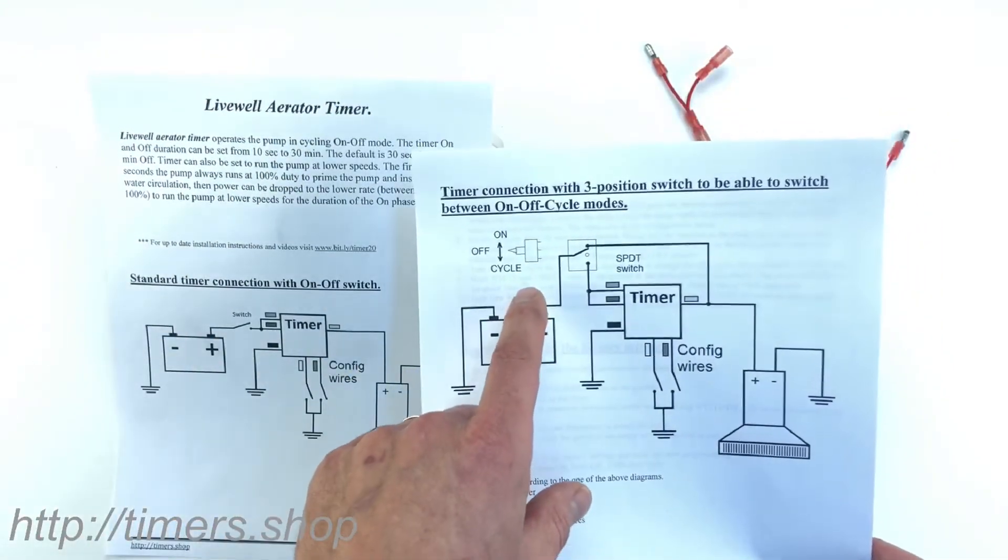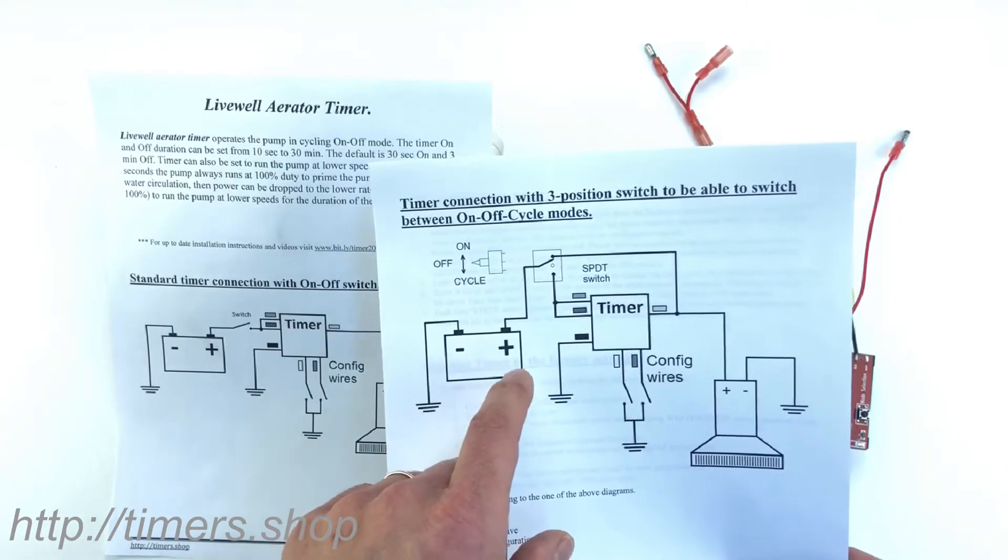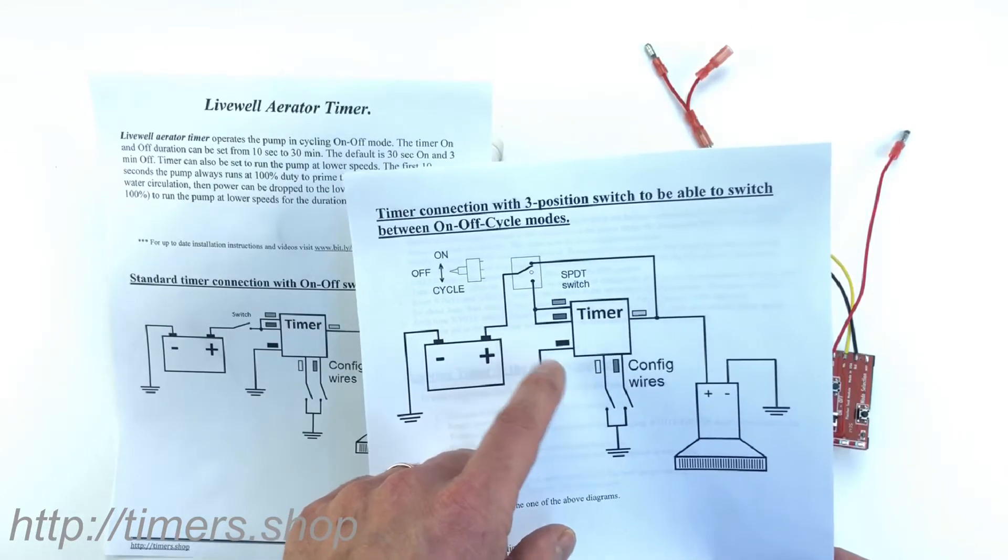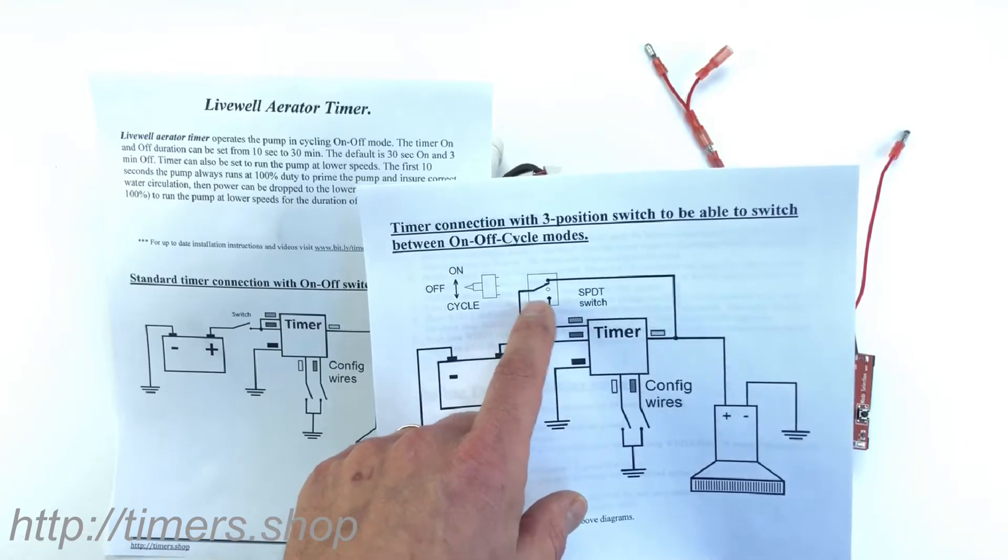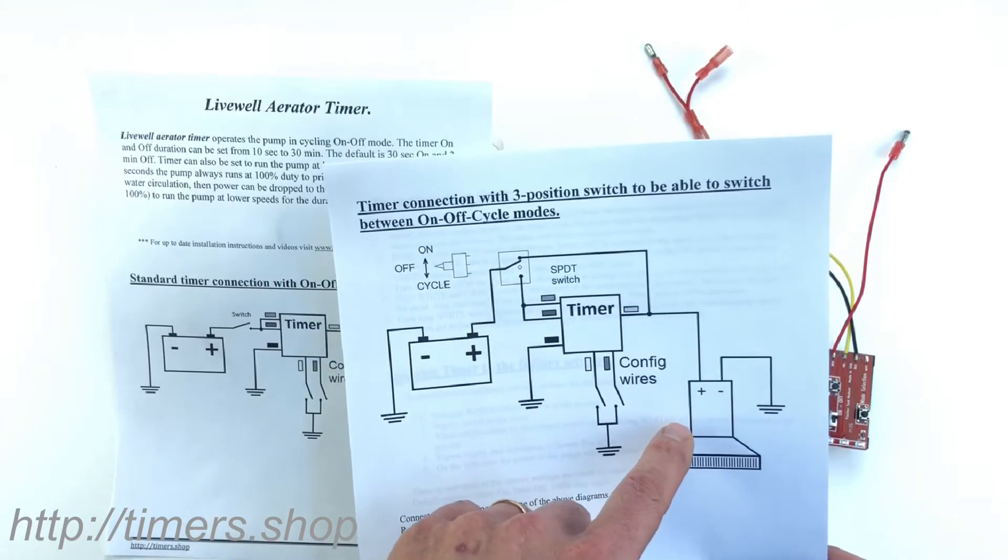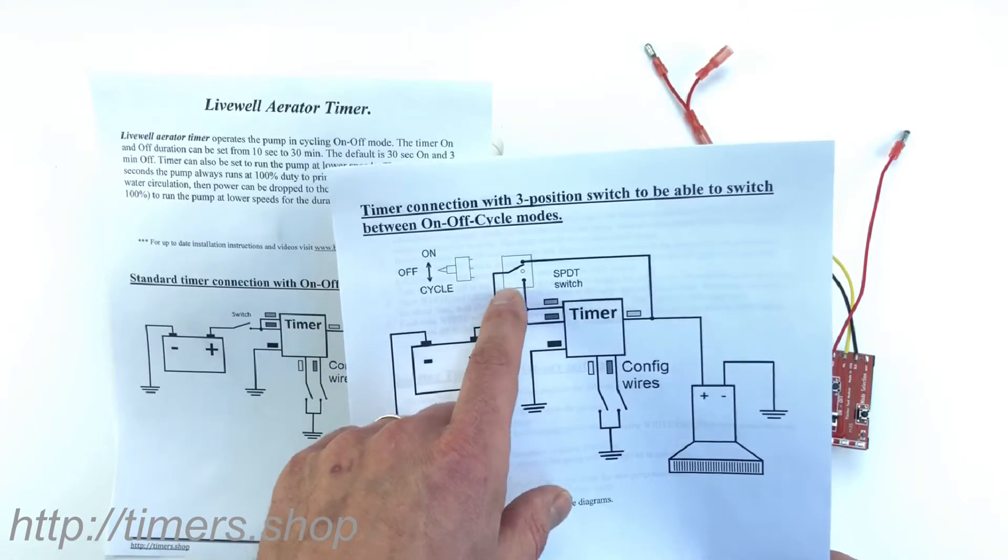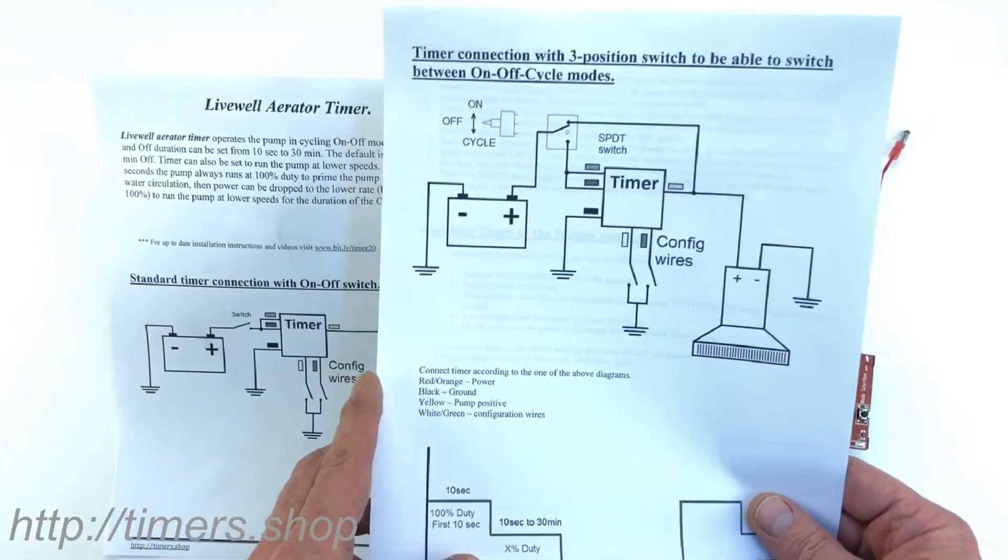The second configuration uses a three-position switch. That way you can either shut the timer off, set it to run through the cycle, meaning supply power to the timer and then it will supply power to the pump, or you can bypass the timer and supply power directly to the pump to continuously run it if you want to.